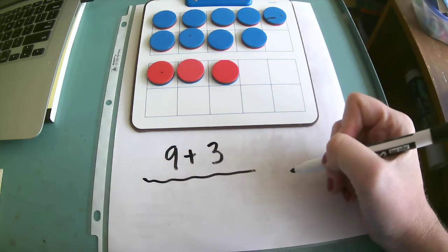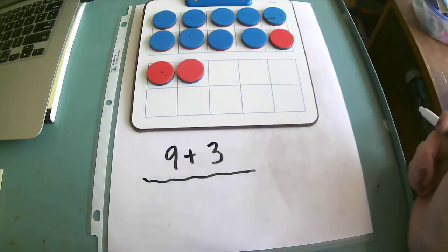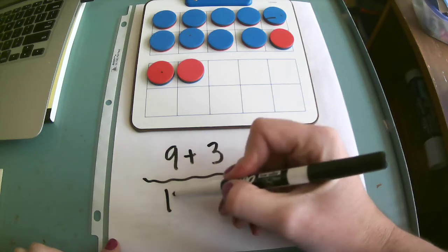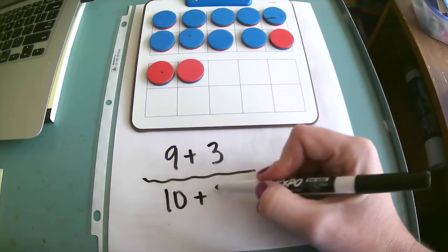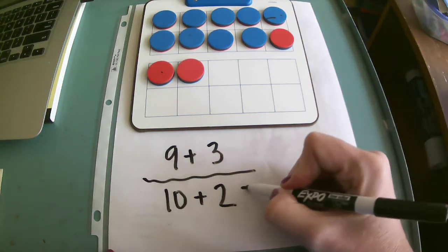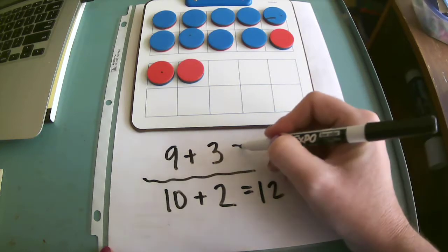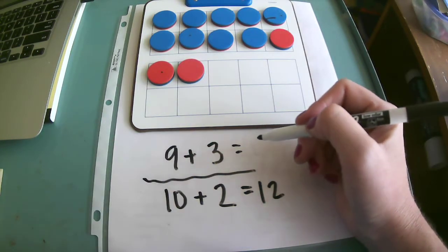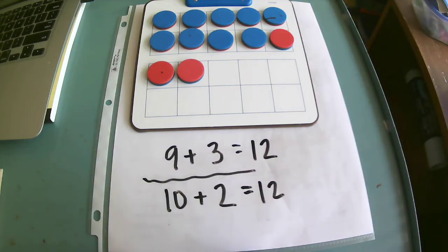I'm going to take 1 from the 10 frame and I'm going to fill up, making the 9 a 10. Okay, and then I know I have 2 left in my 10 frames, so I know that 10 and 2, that's easy for me, is 12. So then 9 plus 3 must also give me 12. Using this strategy of finding that friendly number of 10 will help us add more fluently.